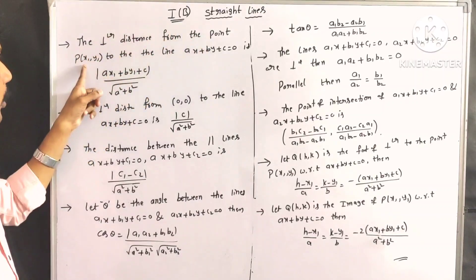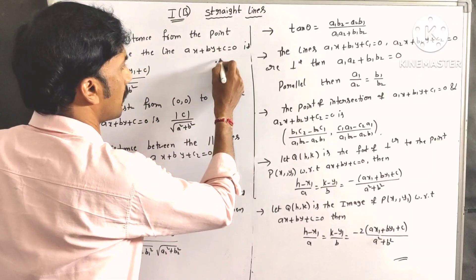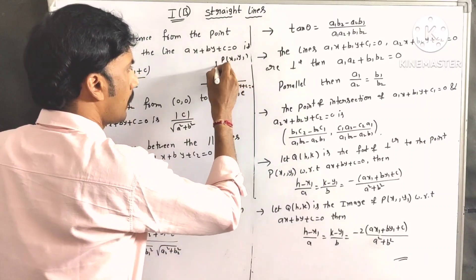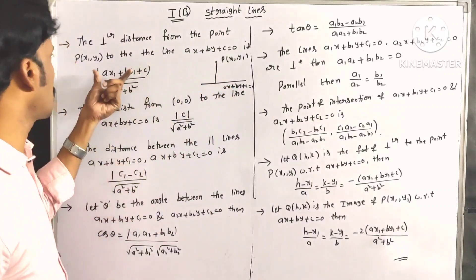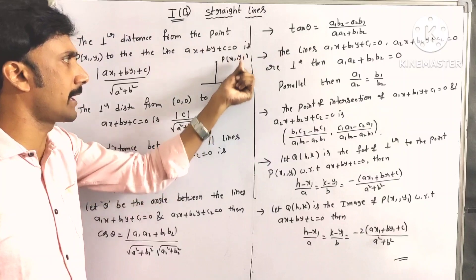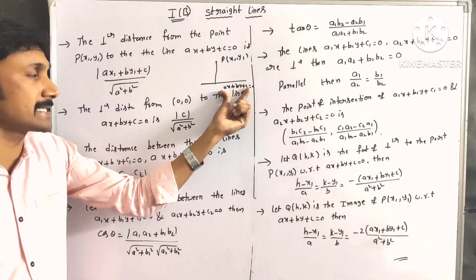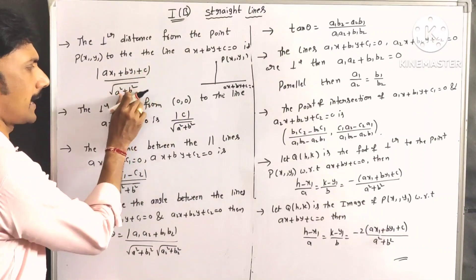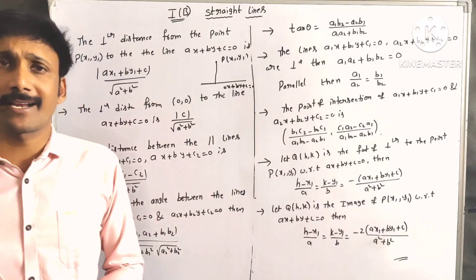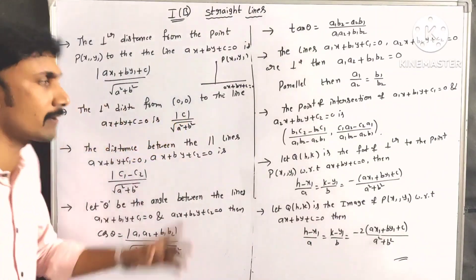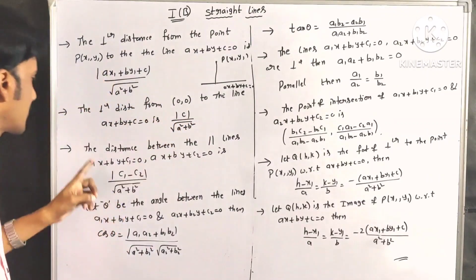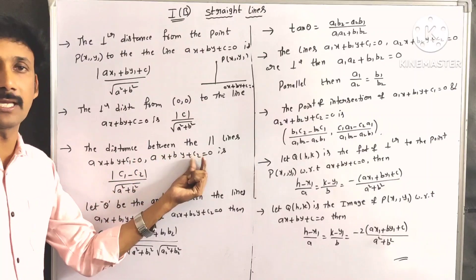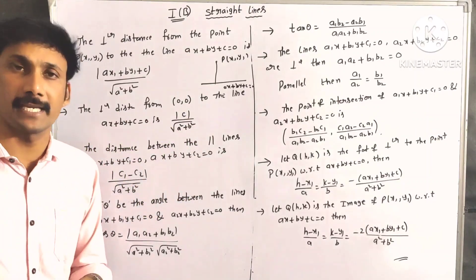The perpendicular distance from a point P of x1, y1 to the line ax plus by plus c equal to 0 is: mod of ax1 plus by1 plus c, divided by root of a square plus b square. The perpendicular distance from the origin to the line ax plus by plus c equal to 0 is mod c by root of a square plus b square. The distance between two parallel lines with same x and y coefficients is also mod c1 minus c2 by root of a square plus b square.